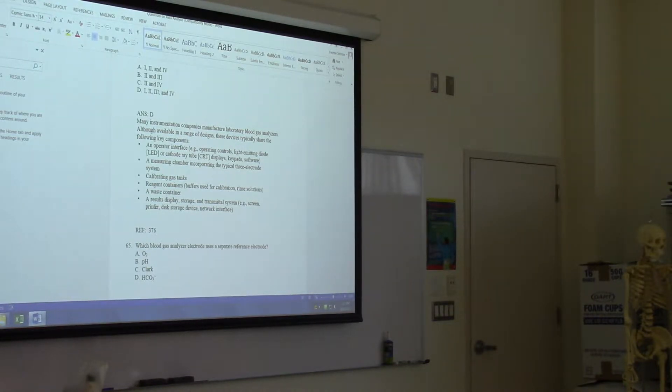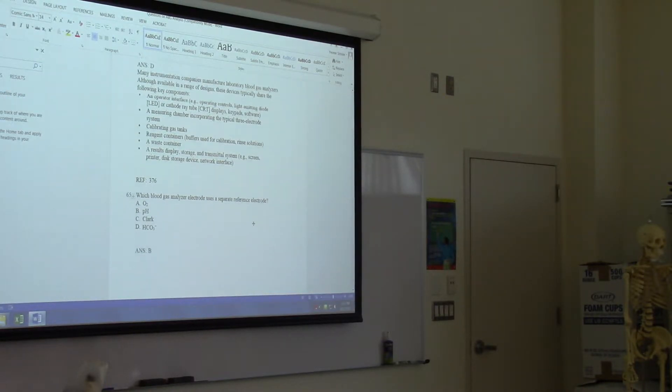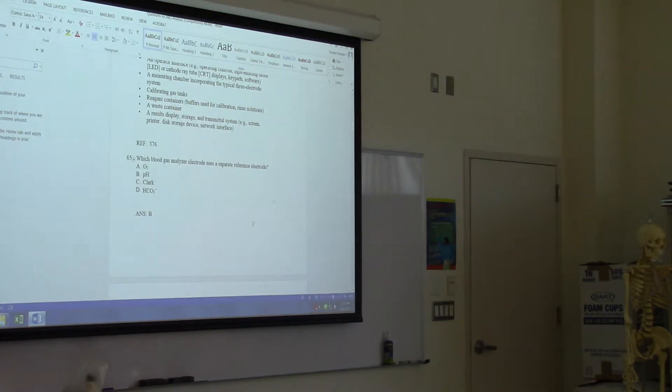There's two electrodes - one is a reference electrode and then the actual measurement electrode. The reference electrode probably has a known pH and then it just compares the difference between the two to come up with what the actual pH is.